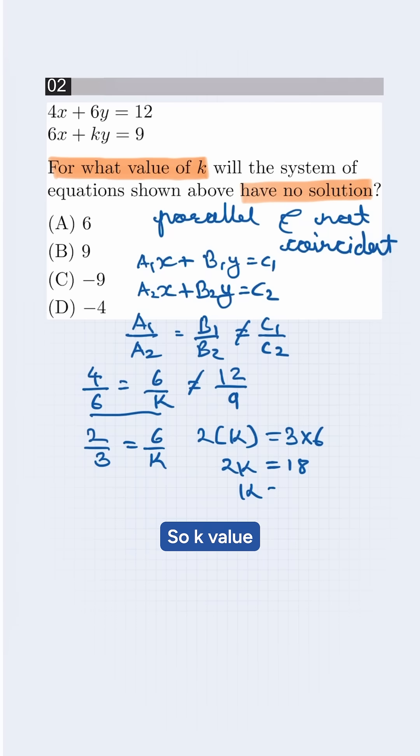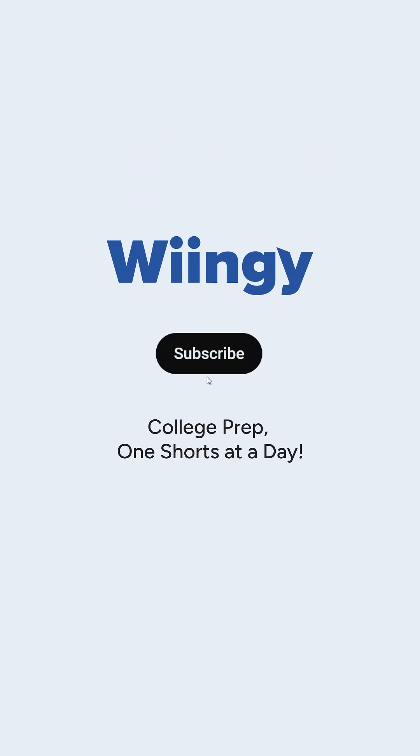So k value will be 9. This is our answer. The correct option will be B. For more SAT problems solved, subscribe now!